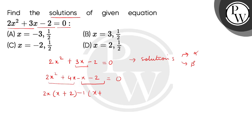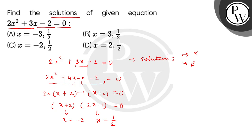This is x plus 2 equal to 0. बच्चों, एक factor मिल जाता है x plus 2 और second factor मिल जाता है 2x minus 1. यहां से हमें solution मिलता है x equals to minus 2 और इसमें से solution मिलता है x equals to half. हम चेक कर सकते हैं that the correct answer will be option number C. Thank you.